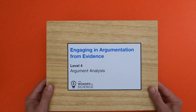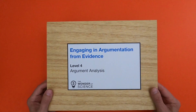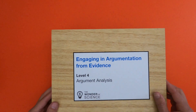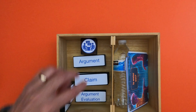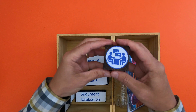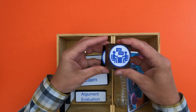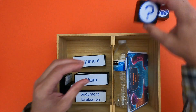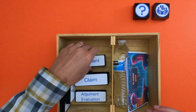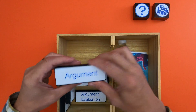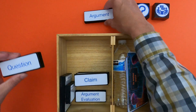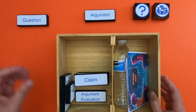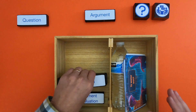Hi, it's Mr. Andersen, and this is a mini lesson on engaging in argumentation from evidence, level 4 argument analysis. The icon for argumentation with evidence is two people, and that's what we're going to do in this video. We're going to look at student arguments that are tied to a question, and that's the first thing you always want to do when you're analyzing an argument: identify what question the argument is trying to answer.